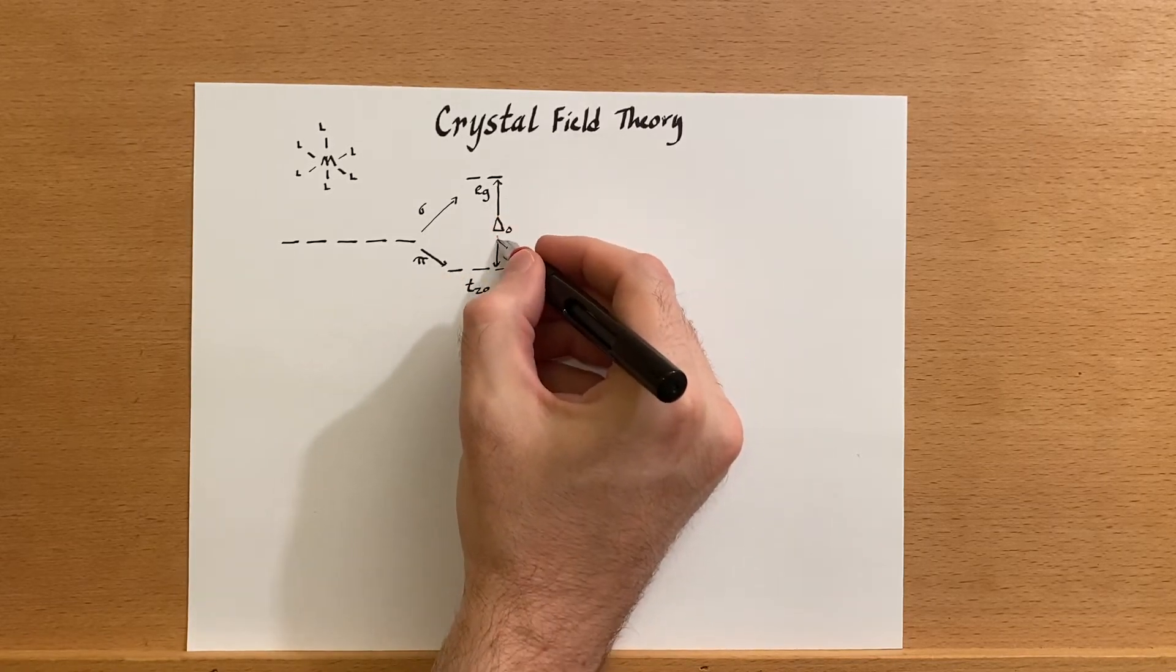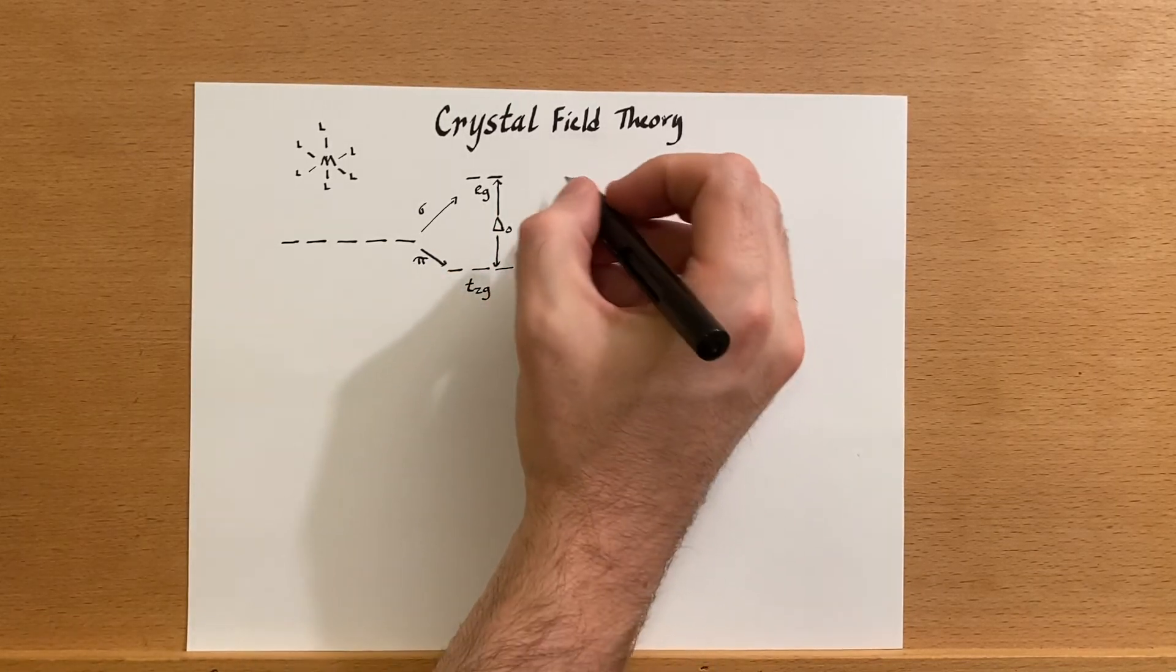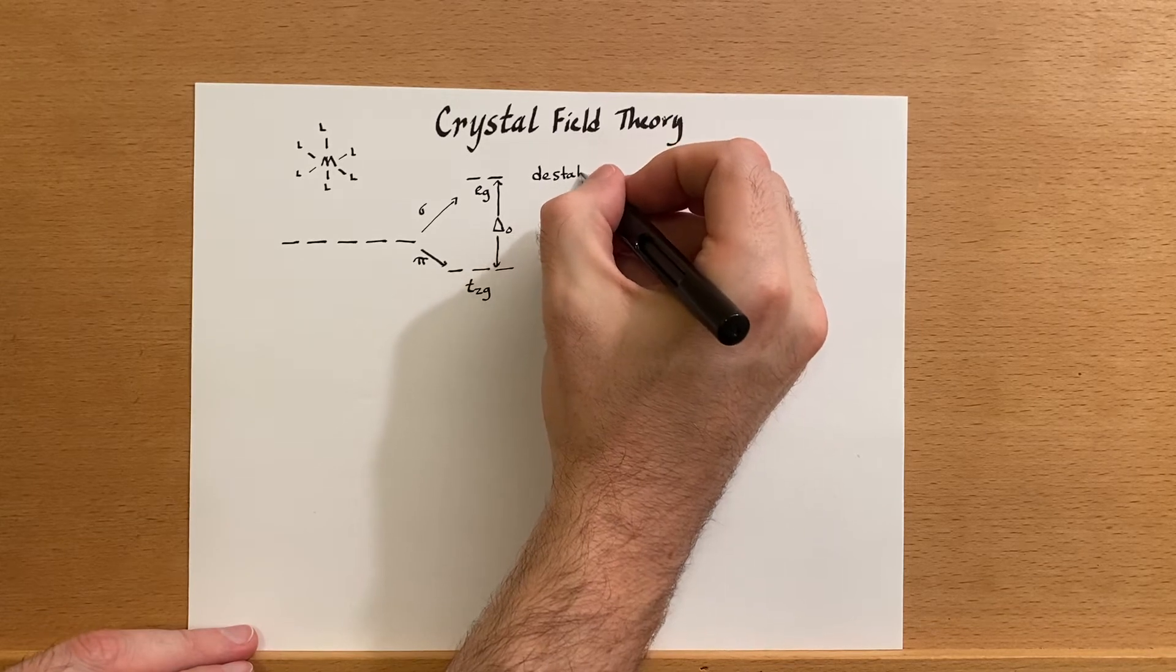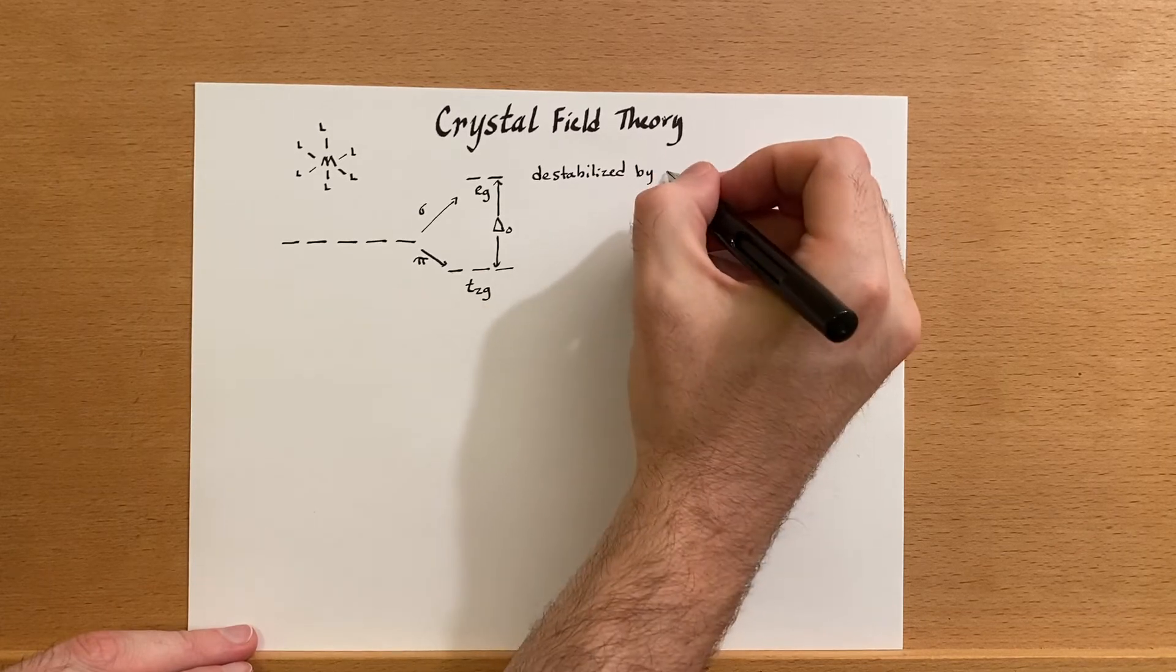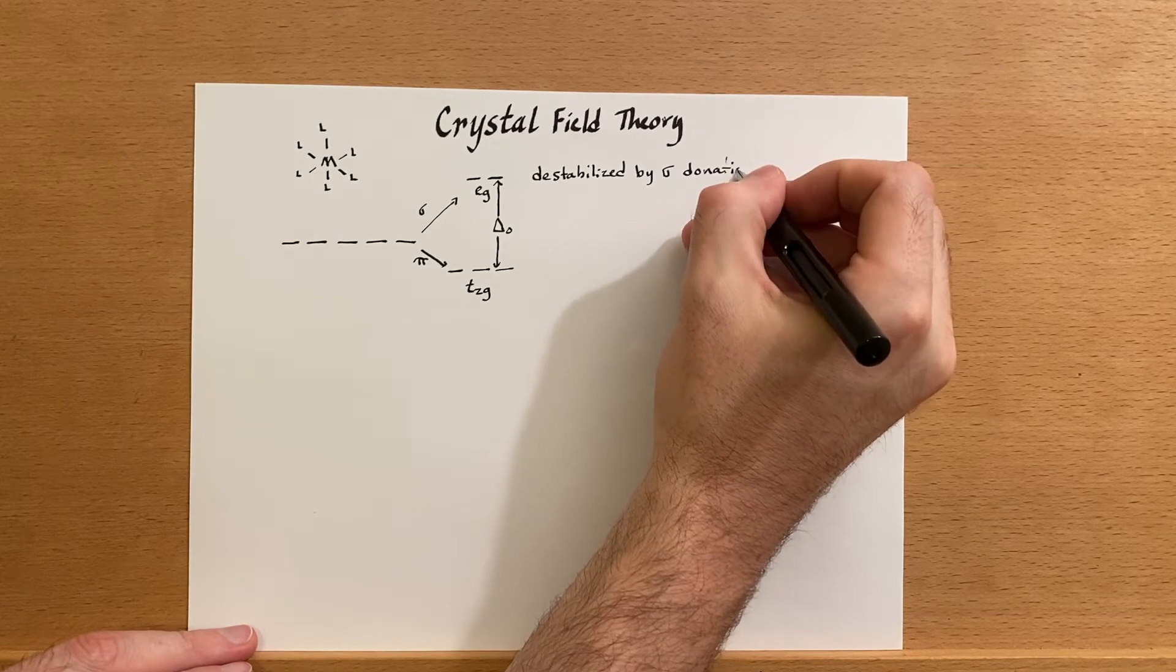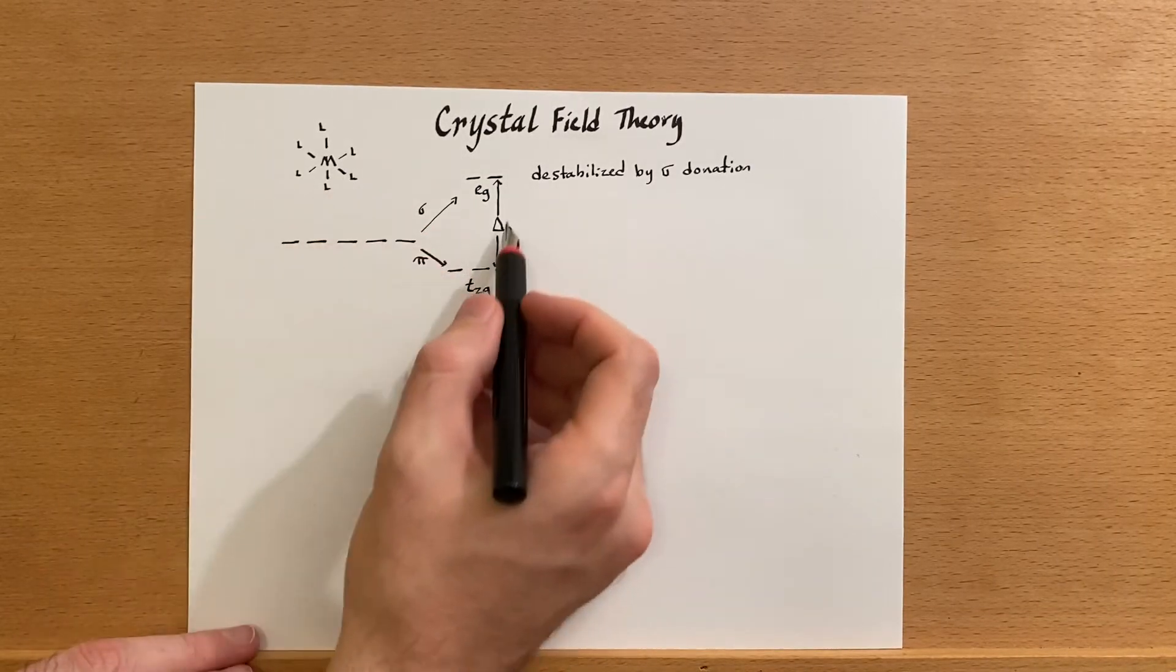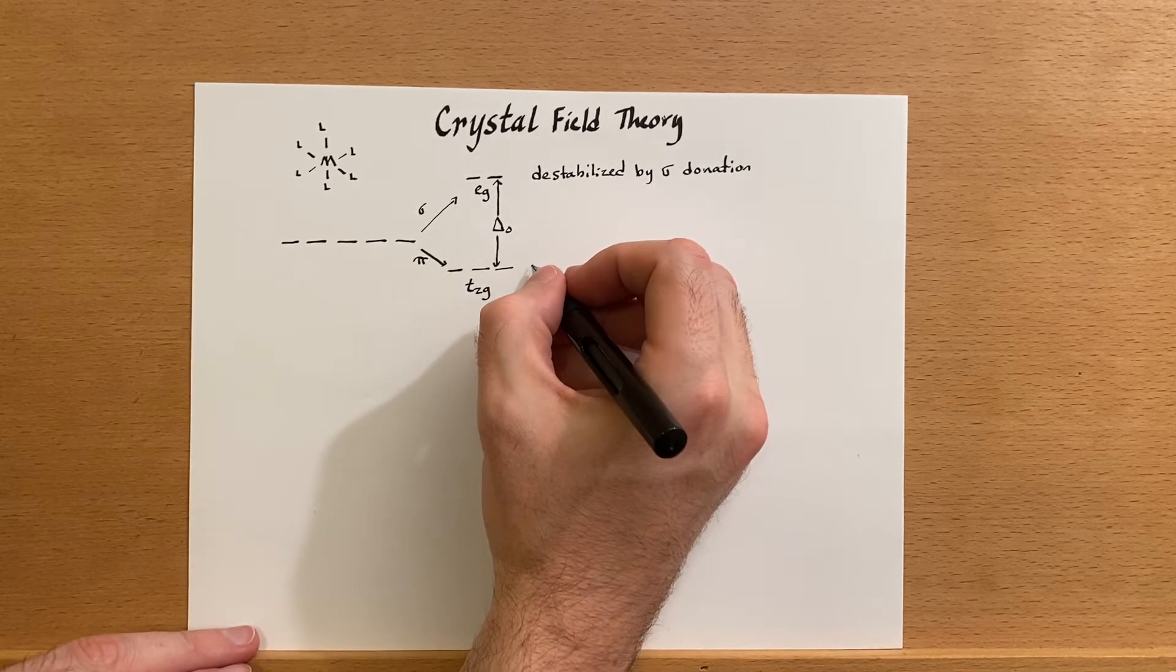Because we're in an octahedral field, that's the difference between these two. Let's write destabilized by sigma donation, and that's from the ligand, right? Sigma electrons directly overlapping with the orbitals that these two orbitals pushes them up.